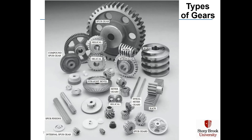I'll highlight a few of these quickly and then we'll go through them in detail. Here we have our most common gears known as spur gears, where the teeth are in a straight direction relative to the plane of the gear — here's a big one, a medium spur gear, and a small one. In helical gears, the teeth are curved, and that gives you a similar rotational direction as the spur gears but with much less noise.